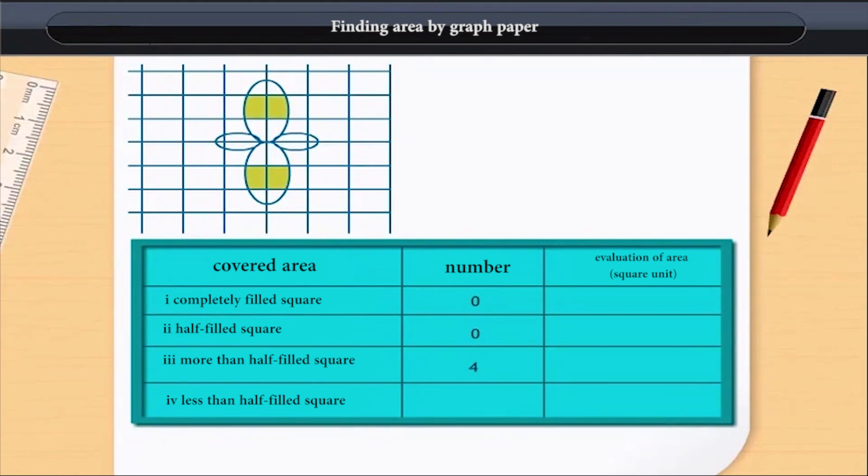Let's consider another picture. Clearly, no square is completely filled here. Also, there is no half filled square. How many more than half filled squares are there? They are 4 in number.